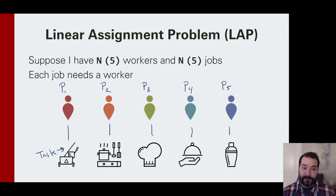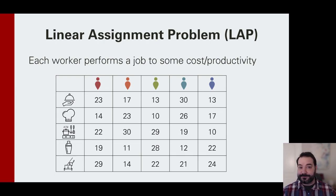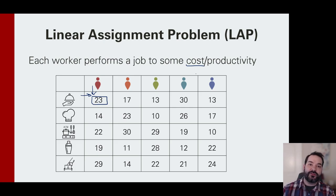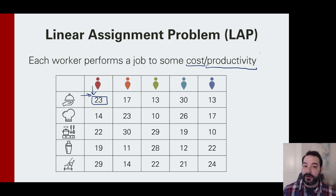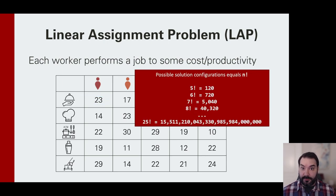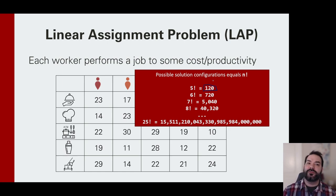The big idea with the linear assignment problem is each task and each person gets some associated value. So if red is a server, that generates a value of 23. Maybe this is a cost — red costs the restaurant $23 an hour to be a server — or it's productivity — red generates $23 of revenue as the server. Our goal is to minimize or maximize that cost or productivity. But as we expand, with five people there are only 120 possible configurations if each person can only have one job.